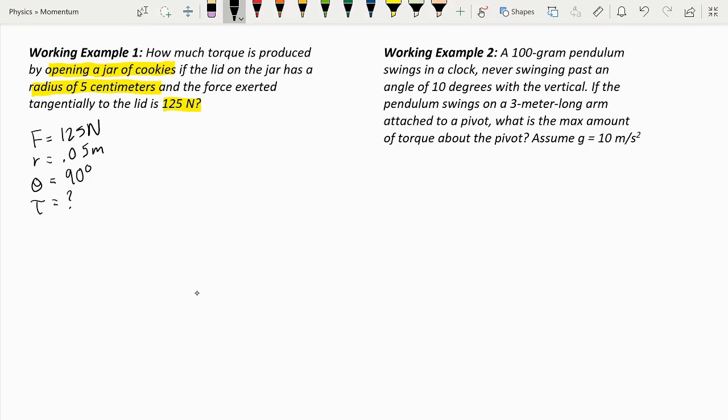We know that the formula for torque is the radius times the force multiplied by sine theta. So the angle here is 90 degrees, and sine 90 is equal to 1, which means we only really have to multiply the radius by the force.